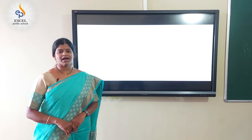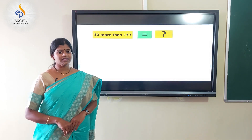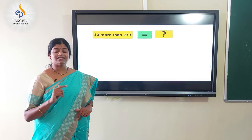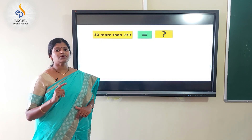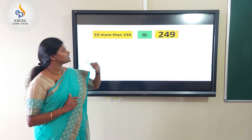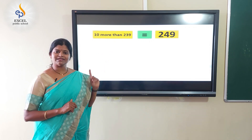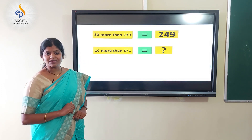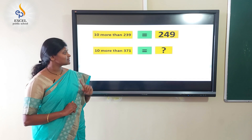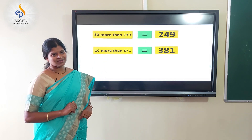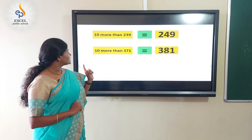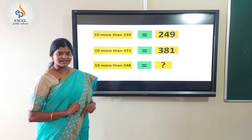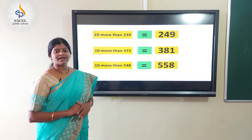Okay, let me ask another question. What is 10 more than 239? Kids, just as in the grid, we have to jump up to the next 10, that is 249. Let's try this. What is 10 more than 371? Yes, it is 381. What is 10 more than 548? Yes, it is 558.